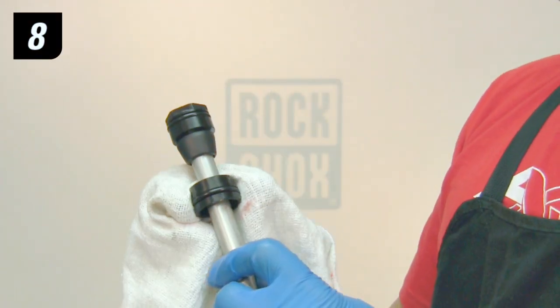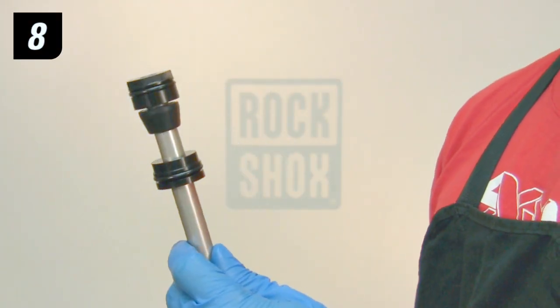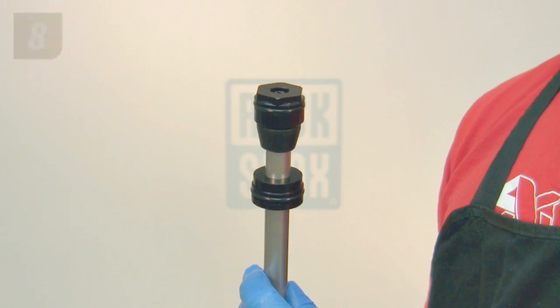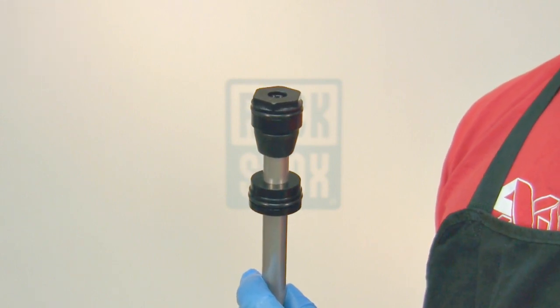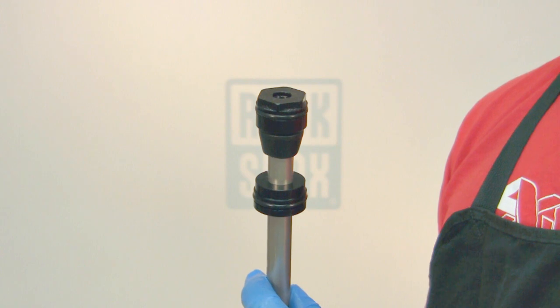In Step 8, we are going to remove and replace the O-rings from the air assembly. Before we do, let's discuss the best practices for replacing O-rings so you don't damage your fork components.